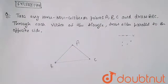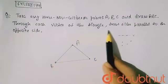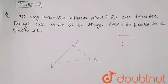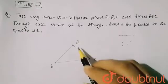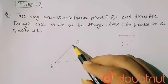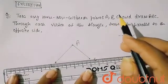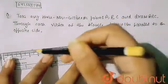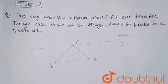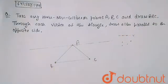Now through each vertex of the triangle, draw a line parallel to the opposite side. First I will take vertex A. Through vertex A, I have to draw a line parallel to the opposite side BC. So this is my parallel line drawn from A, parallel to BC.